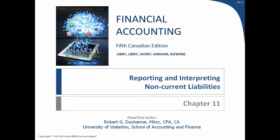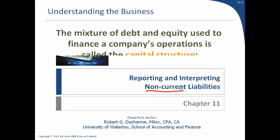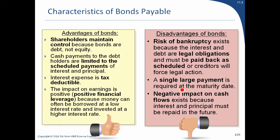We're on to Chapter 11: reporting and interpreting non-current liabilities. The other example was current liabilities; these are non-current. So what are bonds? Up till now we've seen bank debt and notes payable. Bonds work very similarly except bonds are issued — as opposed to a note which is between the buyer and seller — bonds can be purchased by investors the same way shares can.